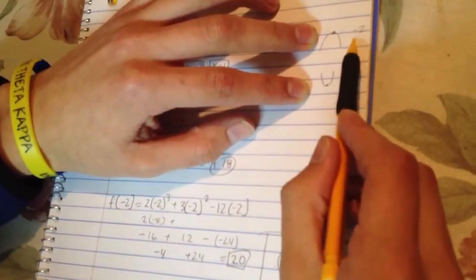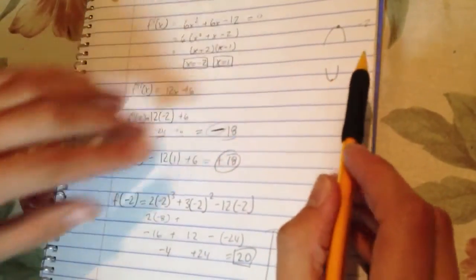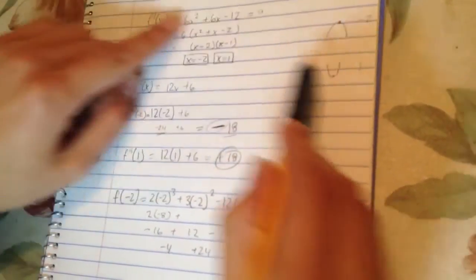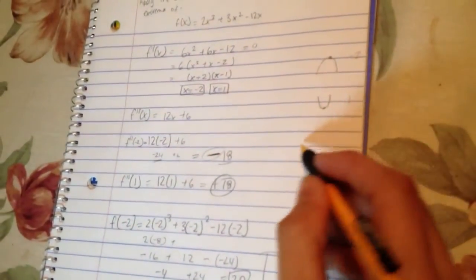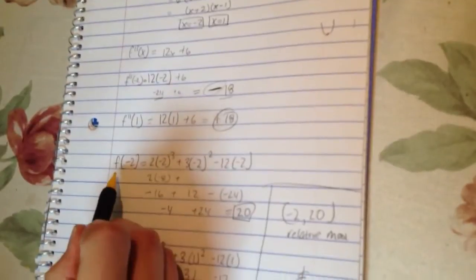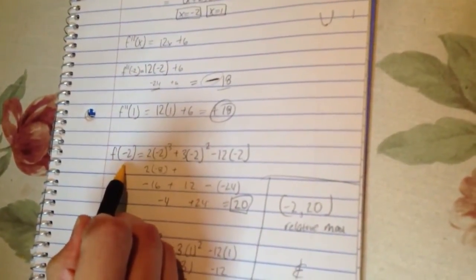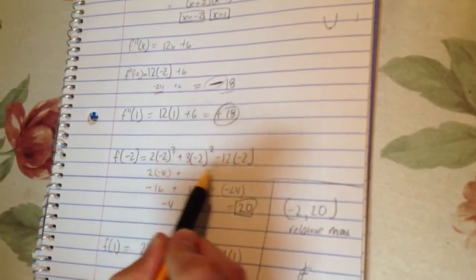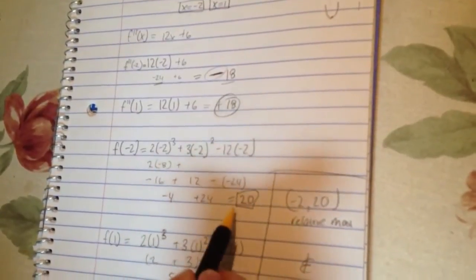So now that you know what they're going to be, a relative max at negative 2 and a relative minimum at 1, take these two values and put them into the original equation to figure out what your y values are going to be, and that's what I did down here. So f of negative 2 put into this equation right here, leaves you with 20.